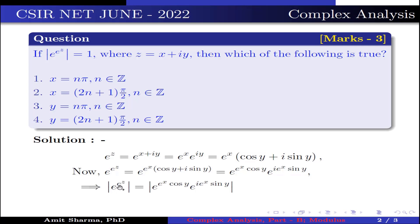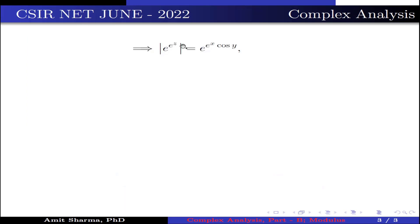Now, taking mod on both sides, we get mod of e^(e^z) is equal to mod of e^(e^x · cos y) · mod of e^(i · e^x · sin y), because |z1·z2| = |z1|·|z2|. Now, the value of |e^(i·theta)| is 1, so this implies mod of e^(e^z) is equal to e^(e^x · cos y), because it is a real quantity. This implies e^(e^x · cos y) is equal to 1, which is further written as e to the power 0.